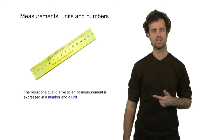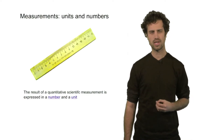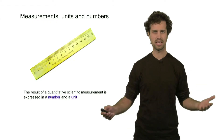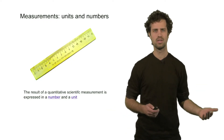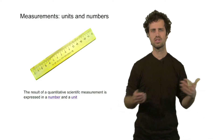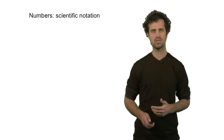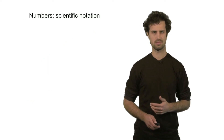In an earlier segment, we have seen that if you do a scientific measurement, you get two things: a number and a unit. We've already talked about the units, so right now I'd like to talk about the numbers. In the natural sciences, we often encounter numbers that are very big or very small, so we need a type of notation to manage these numbers. One of these notations is called scientific notation.